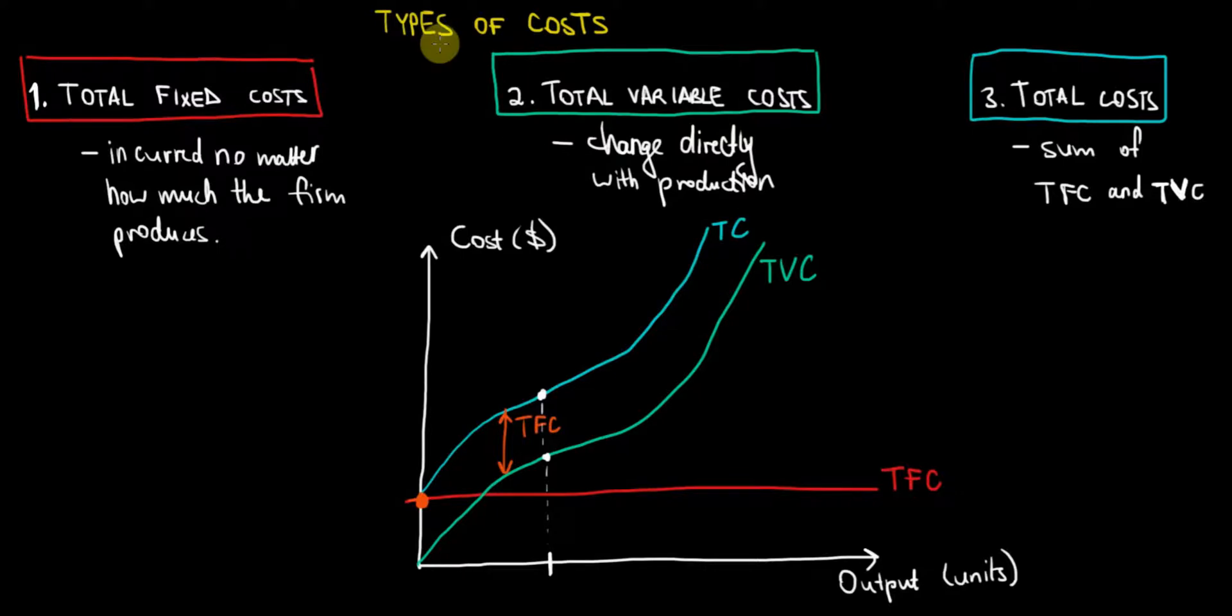In this video I would like to discuss the types of costs that a firm has to incur when producing a certain good. We will have three types of costs and I will go a bit deeper into the graph behind them because the graph is going to explain everything that we need to know.